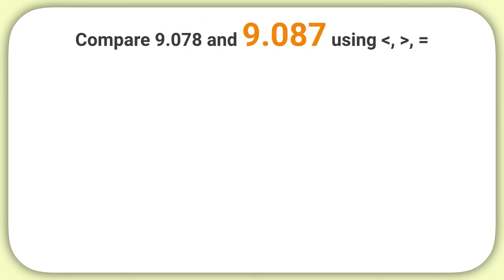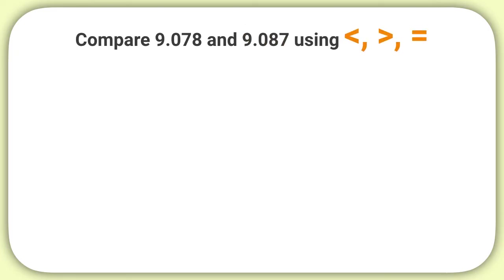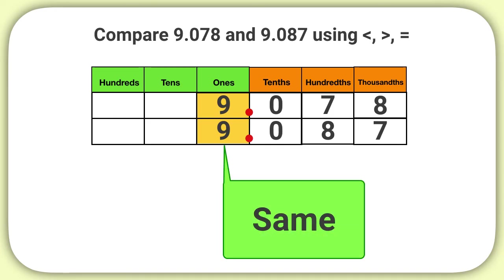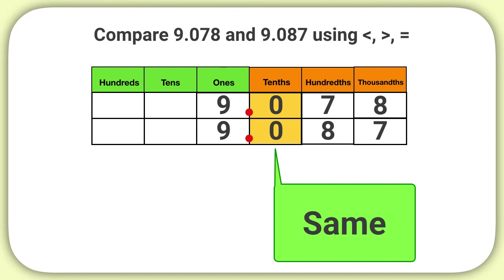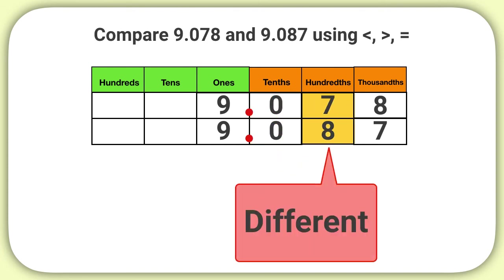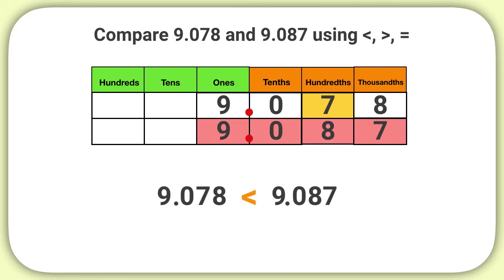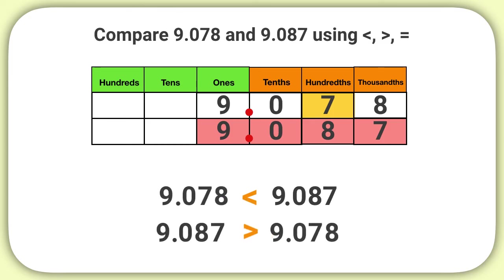Now here's the last one. Compare 9 and 78 thousandths to 9 and 87 thousandths using the greater than, less than, or equal to symbol. I stack the numbers in the place value chart and make sure that the decimals are lined up. I start in the ones place first — both numbers have a 9, so I move to the tenths place. Both numbers have a 0 in the tenths place, so I move to the hundredths place. I see a 7 and an 8. 8 is greater than 7, so 9 and 87 thousandths is greater than 9 and 78 thousandths. I can write: 9 and 78 thousandths is less than 9 and 87 thousandths, or 9 and 87 thousandths is greater than 9 and 78 thousandths.